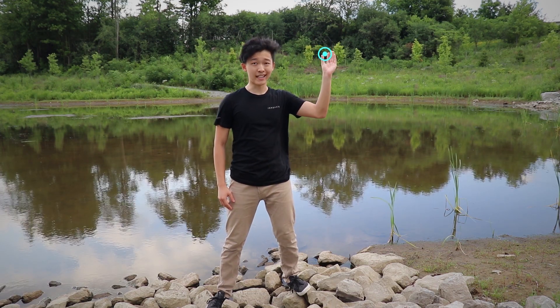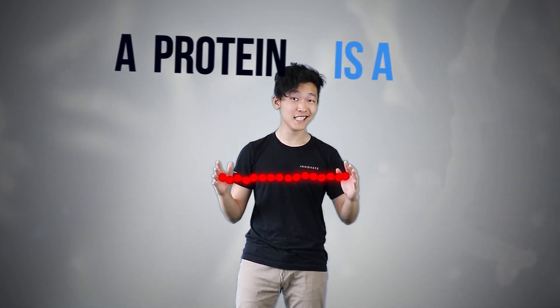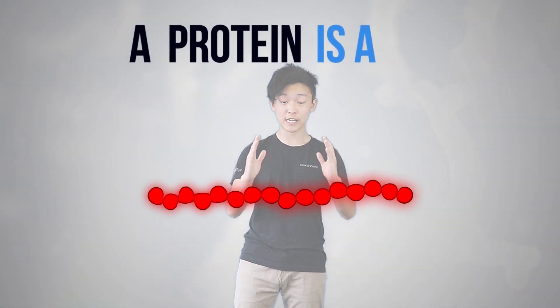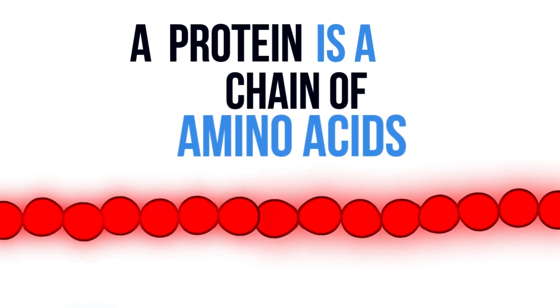Let's shrink down and take a closer look. This is a coronavirus spike protein. It may seem like a single molecular blob, but if we unfold the twists and turns, we can see that proteins are long chains of smaller molecules called amino acids.